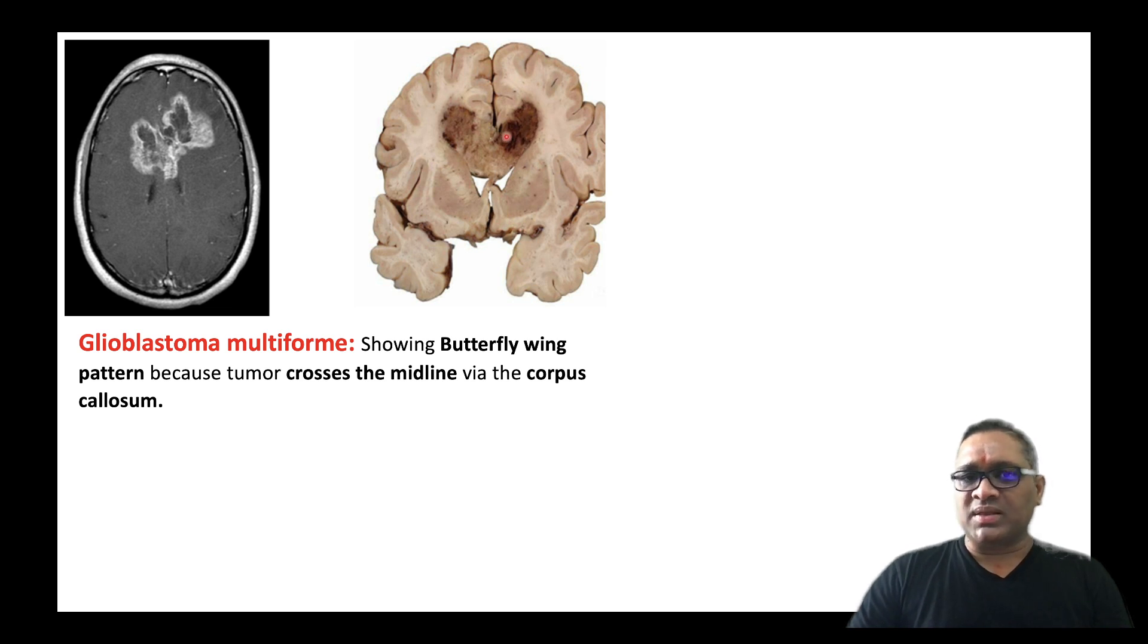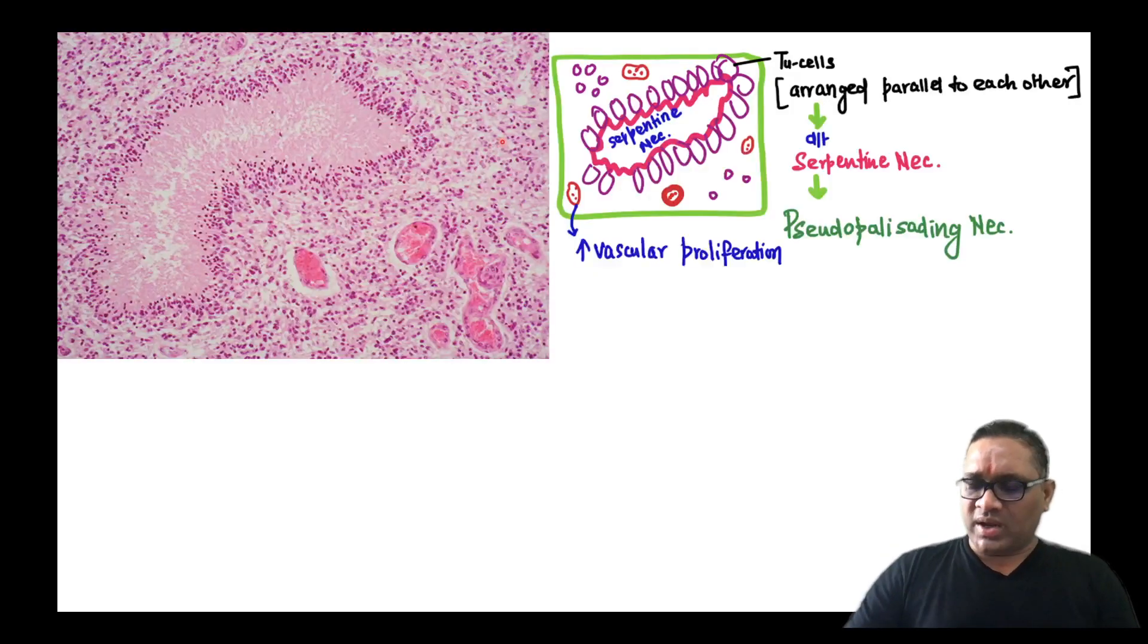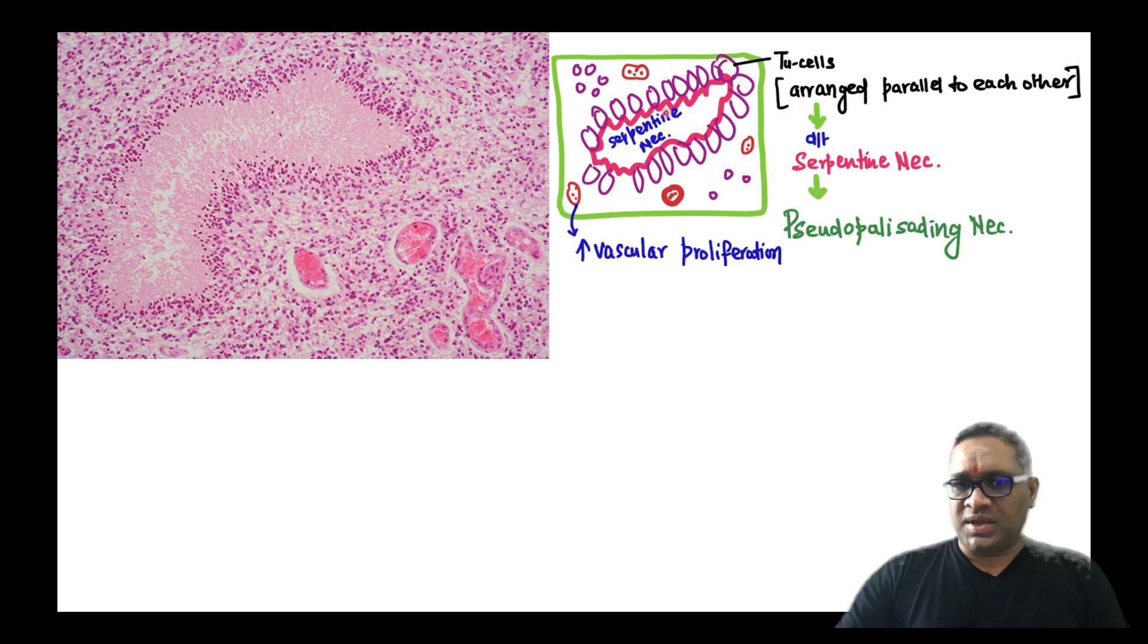On microscopic examination, you can see there is a necrotic area, eosinophilic necrotic area. And this necrotic area, if you look at their borders, they are haphazard serpentine. These are the serpentine necrosis.